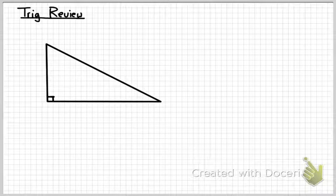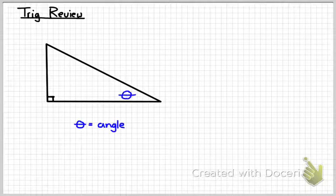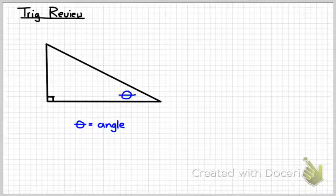So I've got a right triangle there. The first thing we need to do is designate an angle that we're going to be dealing with. The symbol theta represents the angle that we either wish to find or that we know.